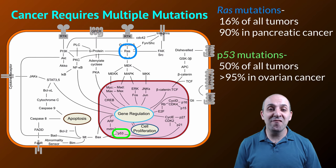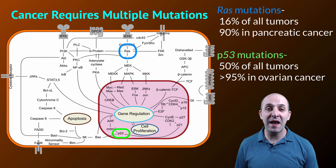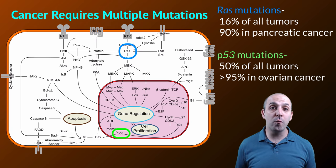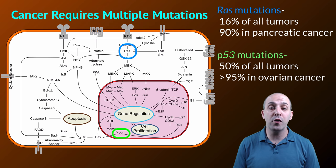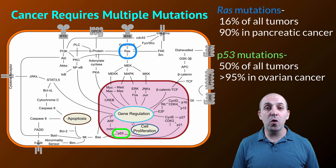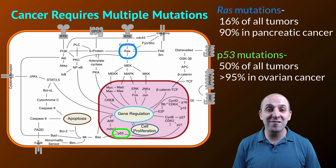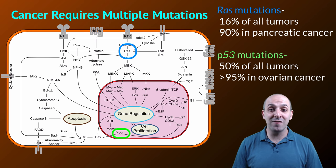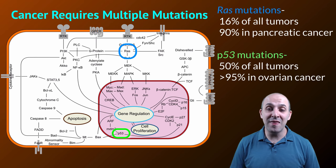The point here is that you need to have multiple different mutations that have multiple different effects on the actions of these proteins in order to take a functional normally responding cell and turn it into something that starts to divide when it shouldn't. That's why cancer tends to be a disease of older age. The longer you live on earth the more likely you'll accumulate the kinds of mutations that have to happen in your DNA in order to lead to the production of these mutant proteins that interact in a way that leads to cancer.